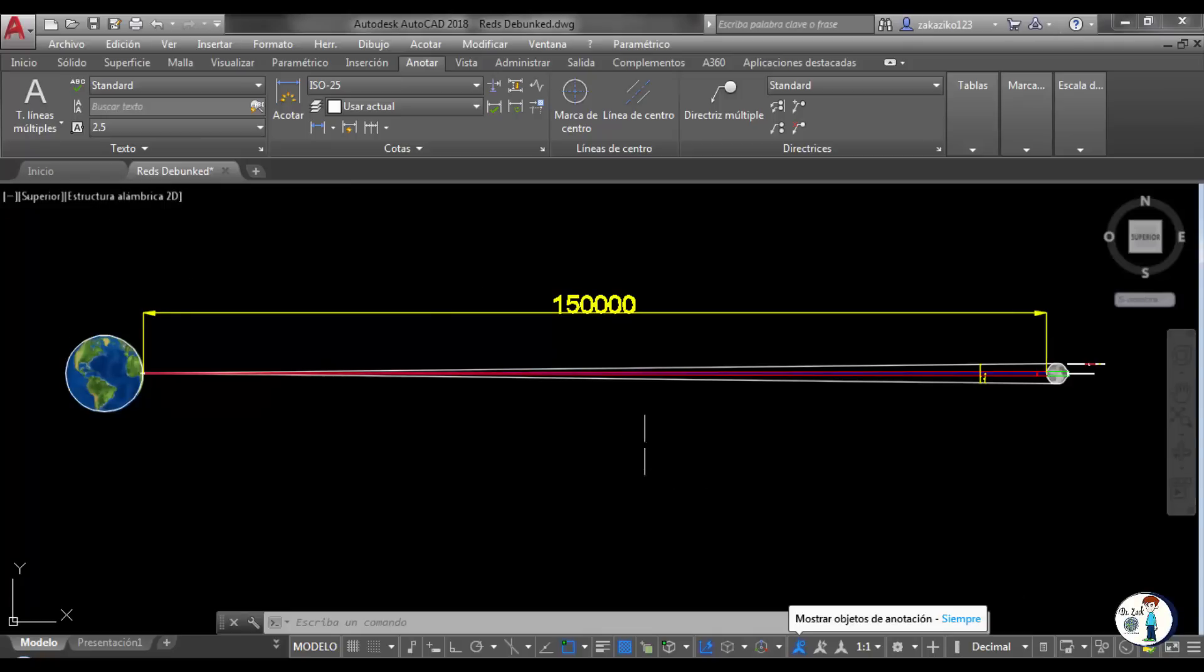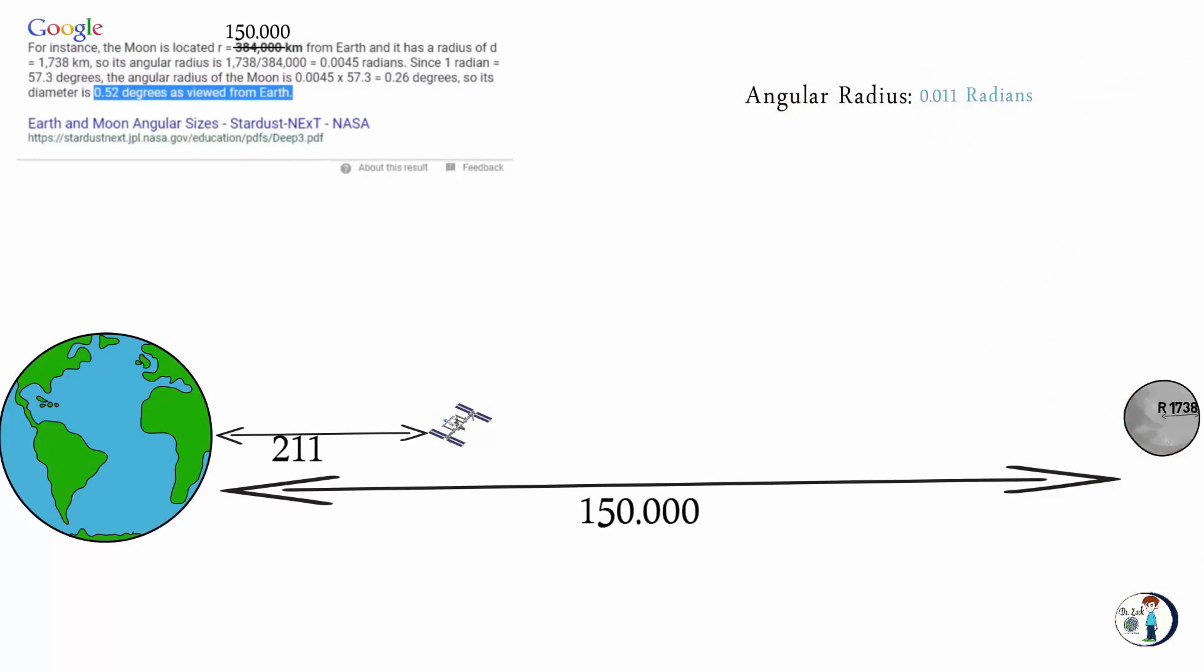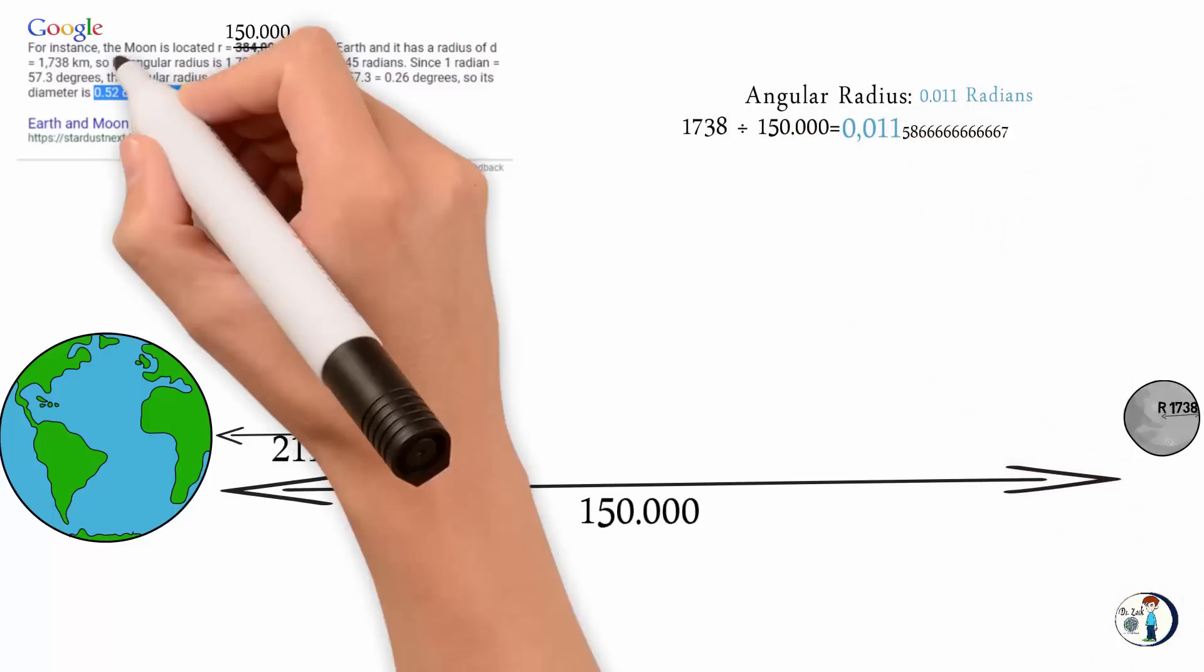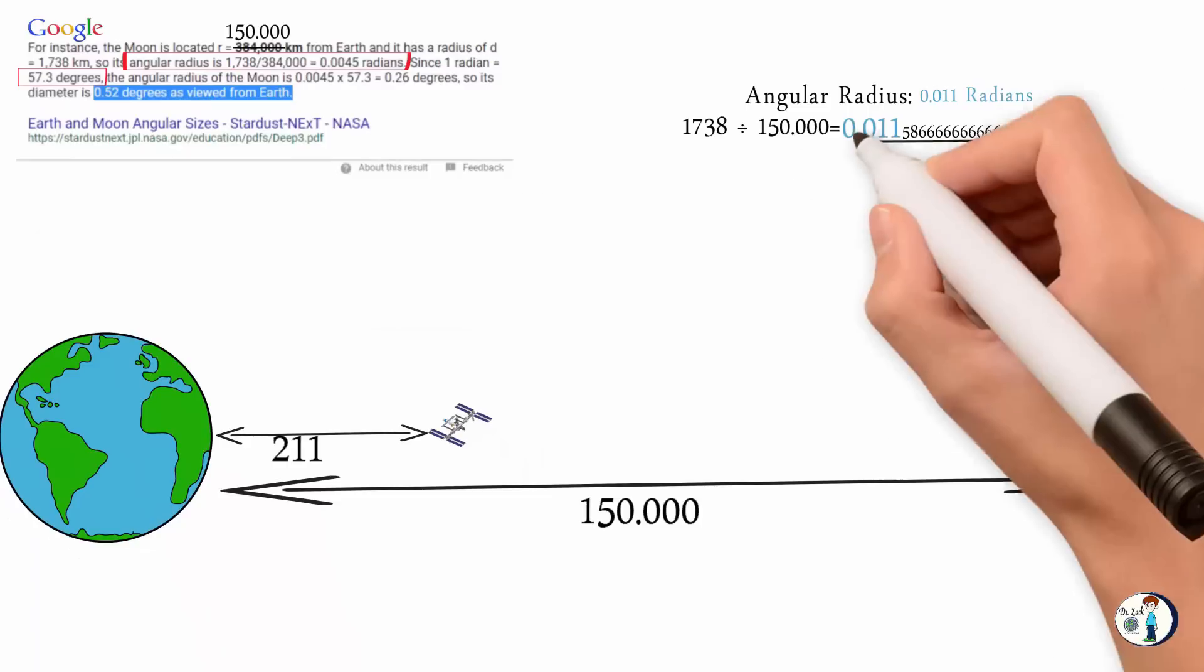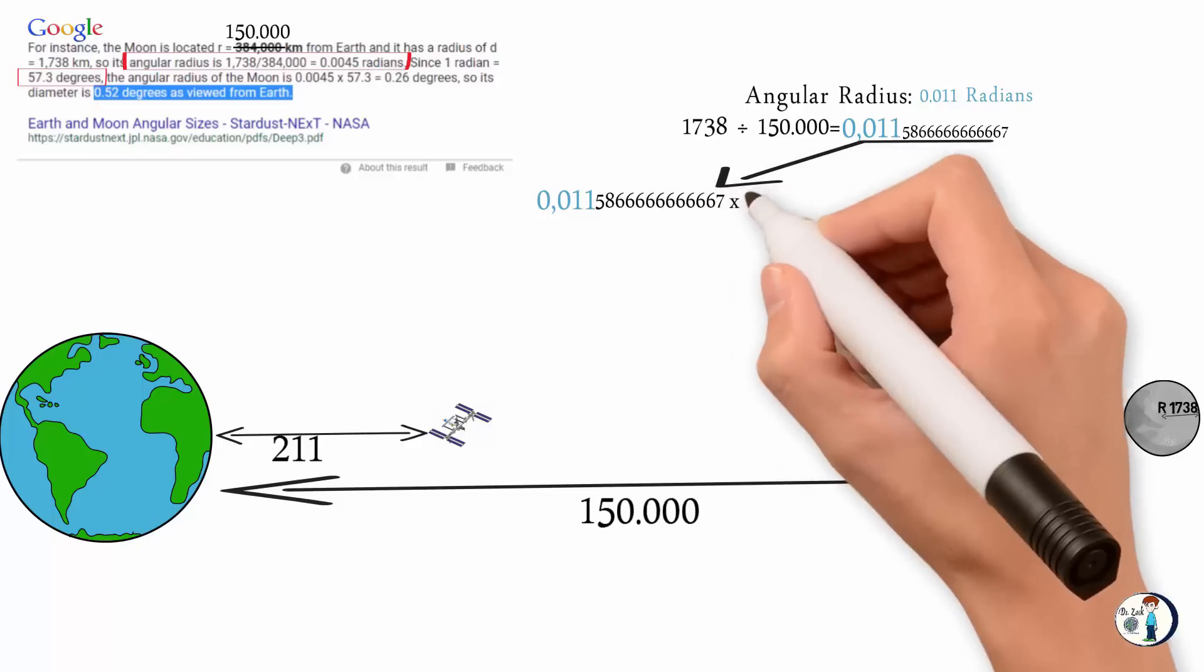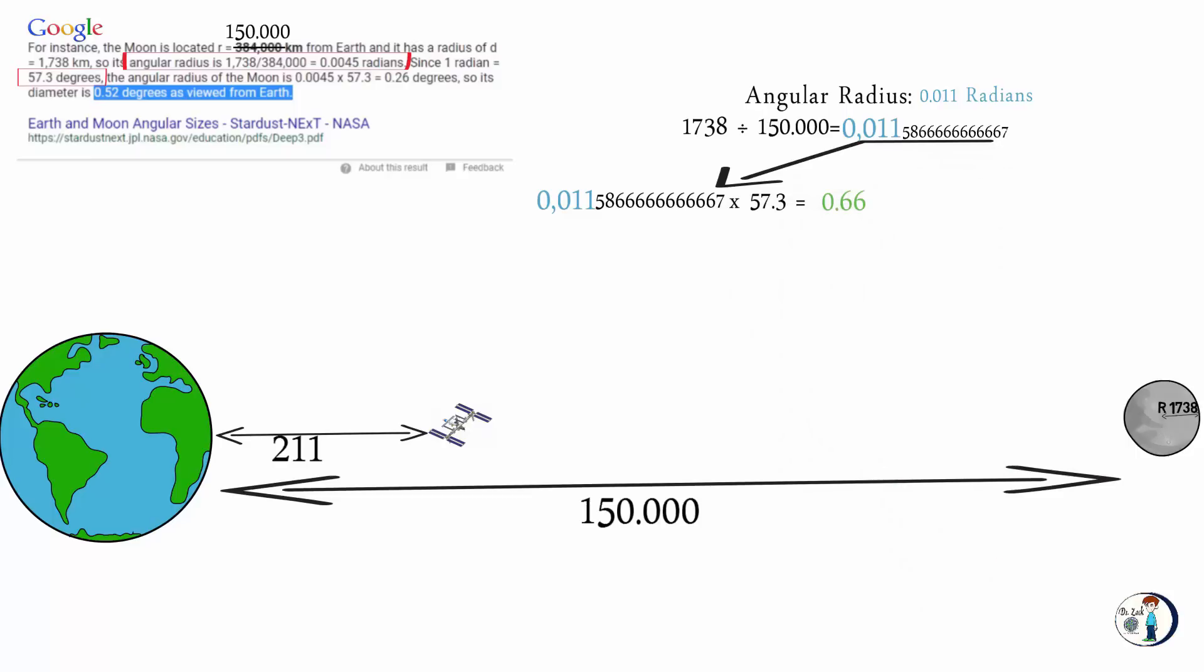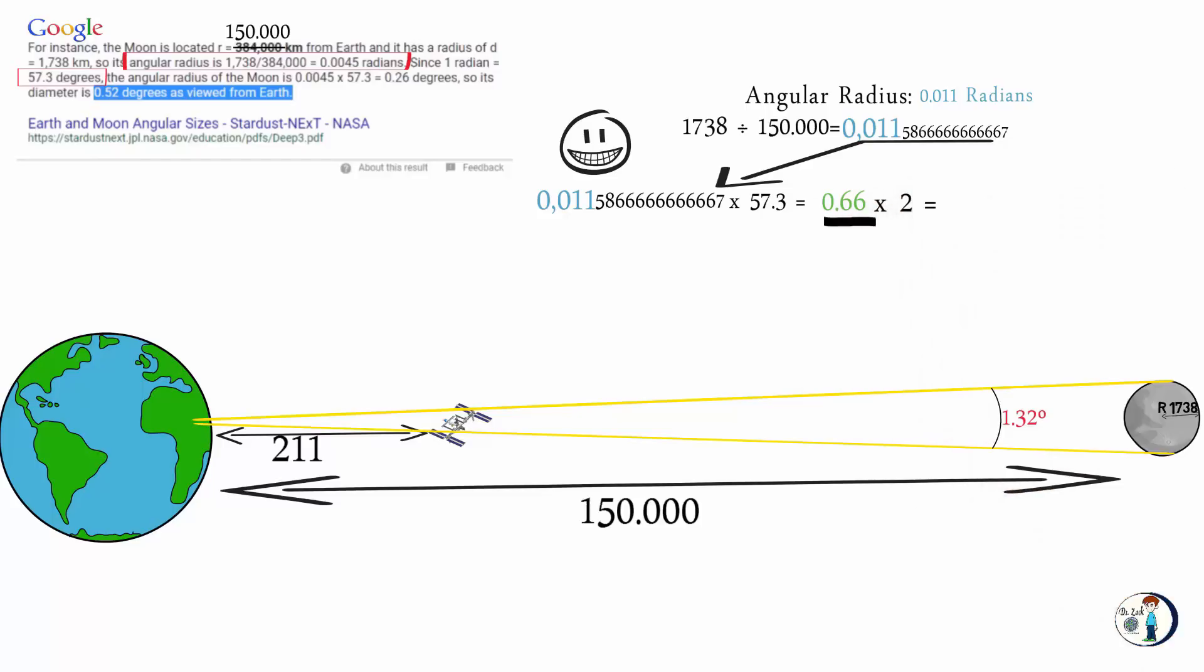Let's continue with the official data. Moon radius is the same, 1738 kilometers. Angular radius therefore has to be 0.011 radians. This is how we get it: we divide the radius of the moon by the distance. Since one radian is 57.3, we do 0.01158667 times 57.3 equals 0.66. So its diameter is 1.32 degrees. We just double it: 0.66 times 2 equals 1.32.